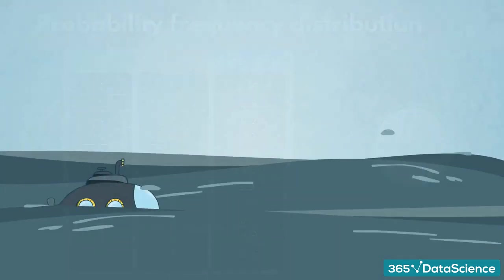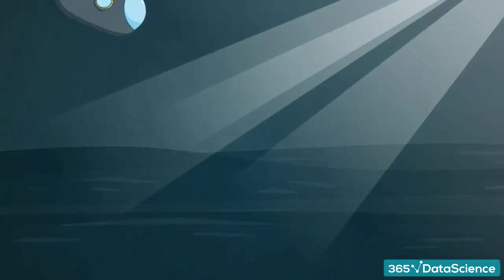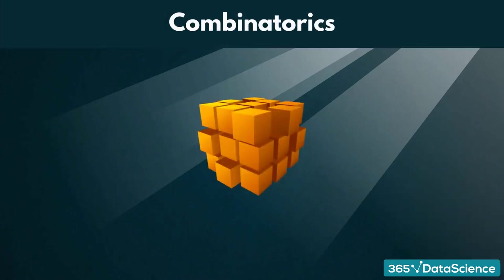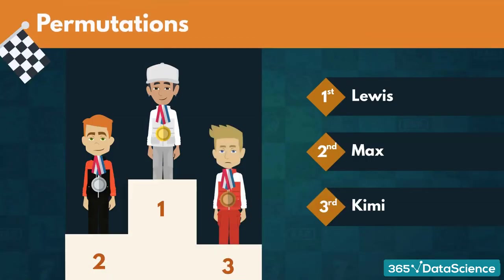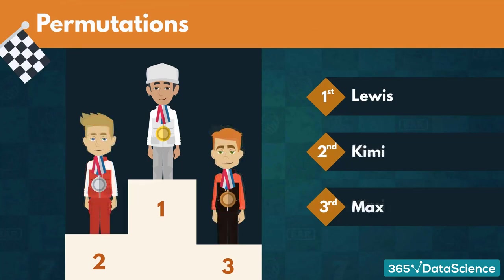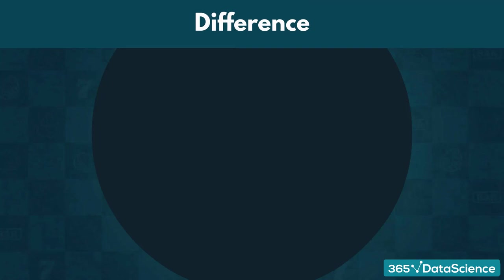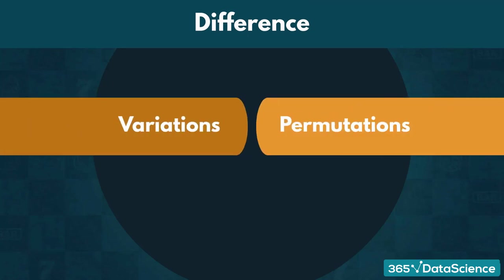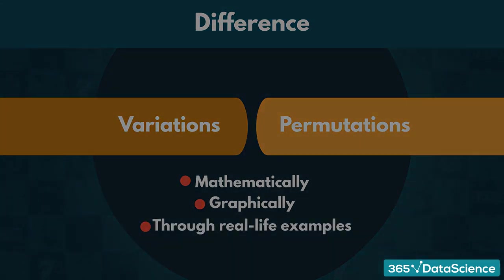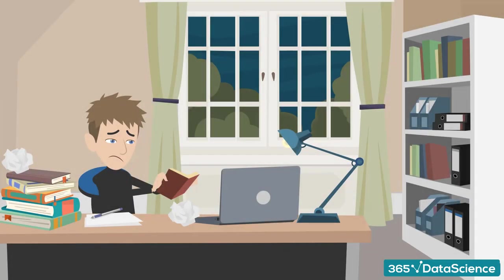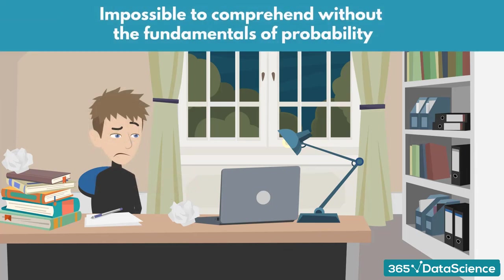Once we have the basics, we will go deeper. Bit by bit, we will start unfolding the power of combinatorics. We will explore permutations, how to compute them, and how to apply them to real-life scenarios. We will take some extra time to clarify the difference between variations and permutations, which will be explained mathematically, graphically, and through real-life examples. We go over examples in each field which are impossible to comprehend without a solid understanding of the fundamentals of probability.